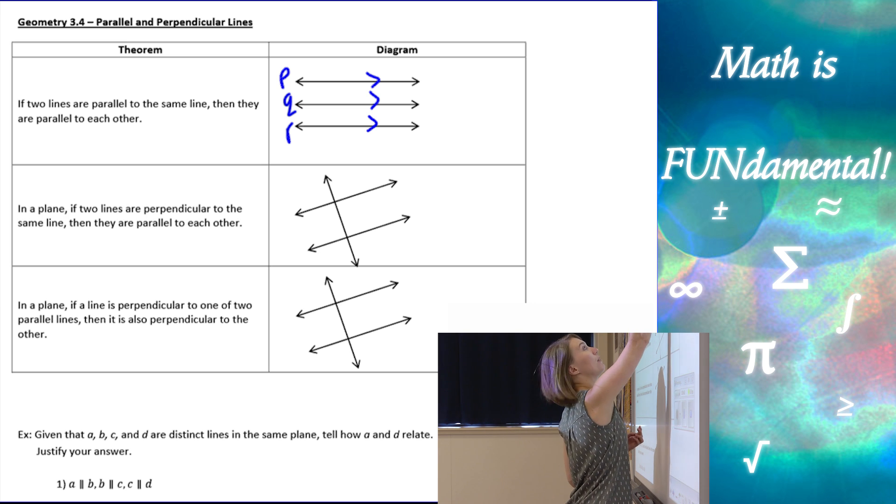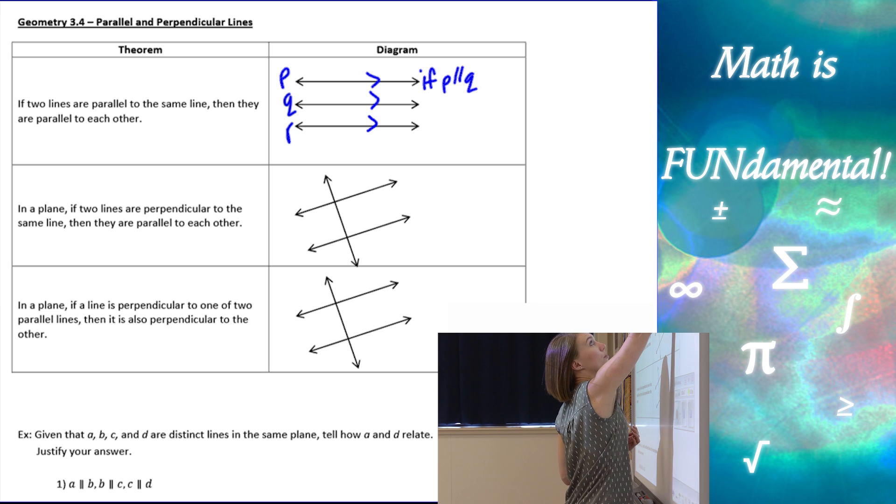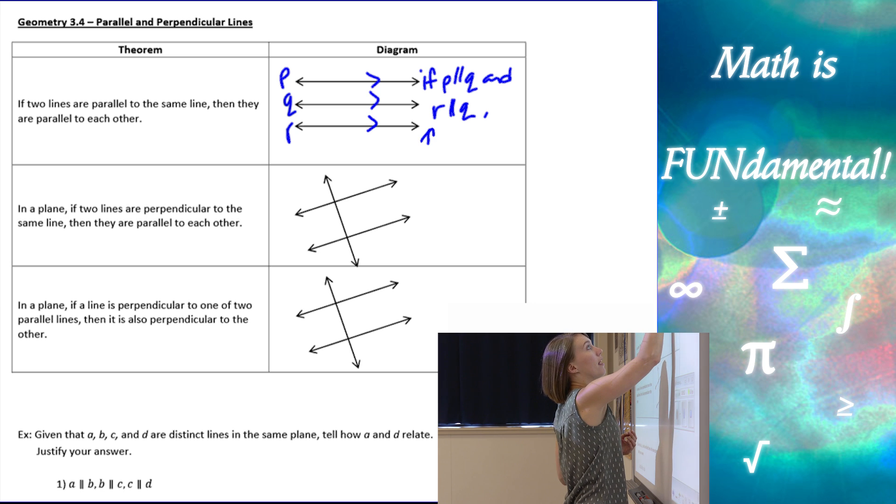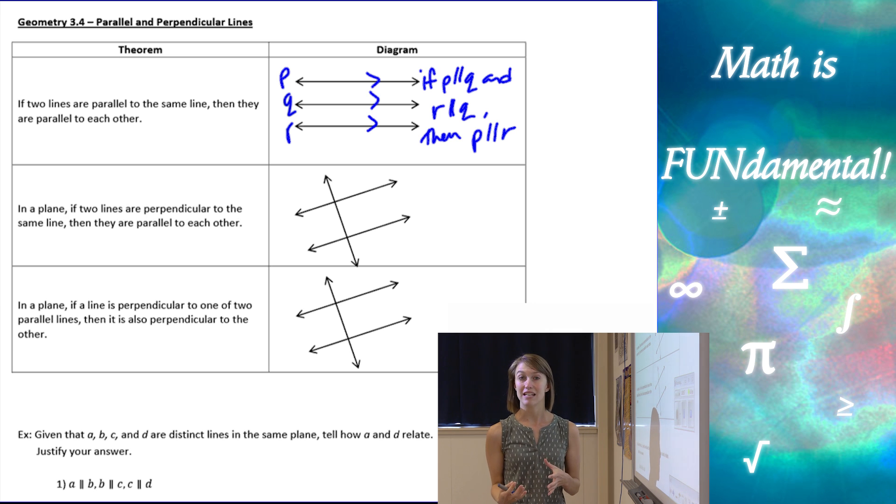So, symbolically, what that looks like is if P is parallel to Q and R is parallel to Q, then P is going to be parallel to R. So, that's what that theorem states.